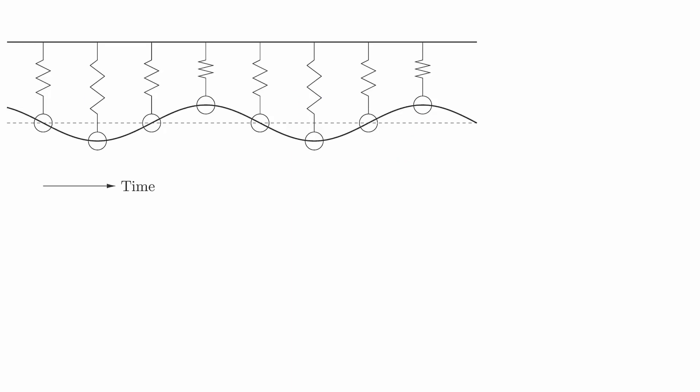If we chart the position of the mass over time, we get a sine or cosine curve. There are some features about this curve that are important to know about. The first is the amplitude, which is the maximum displacement from the equilibrium position.